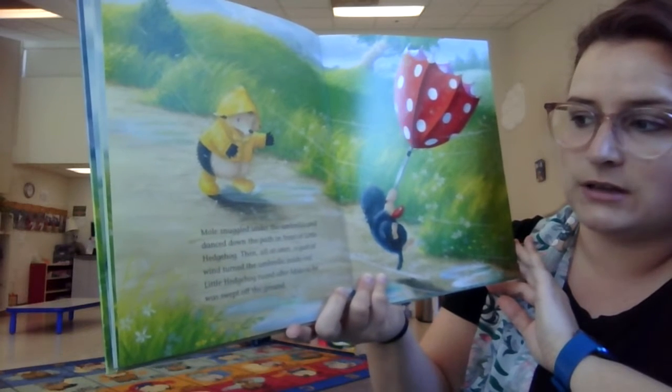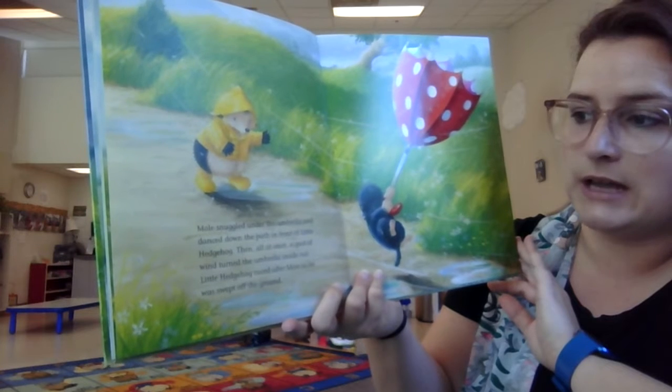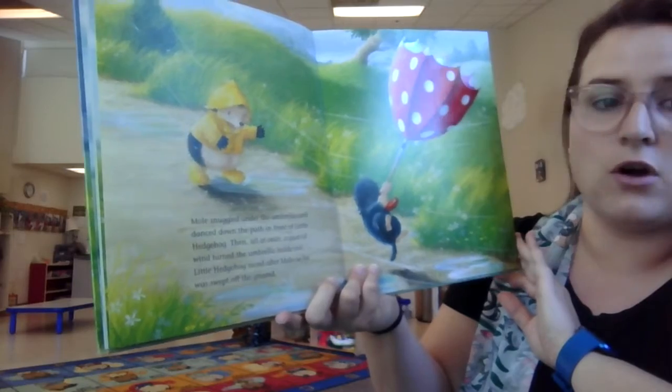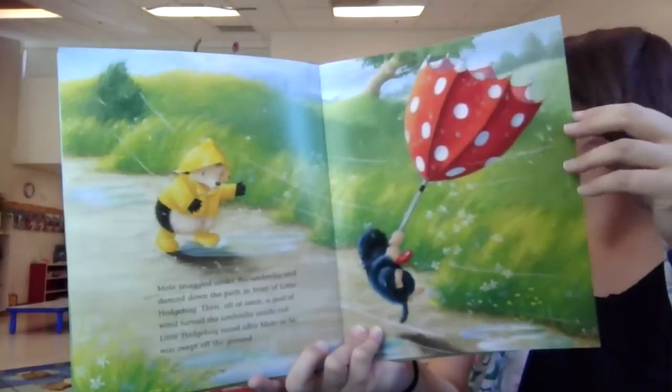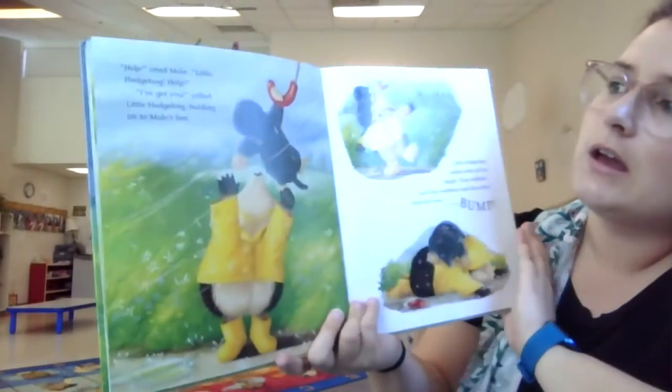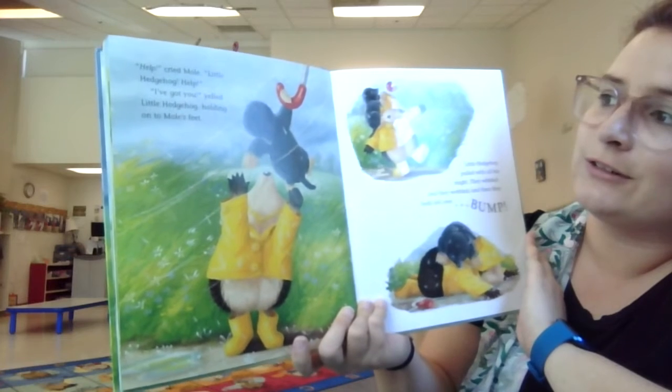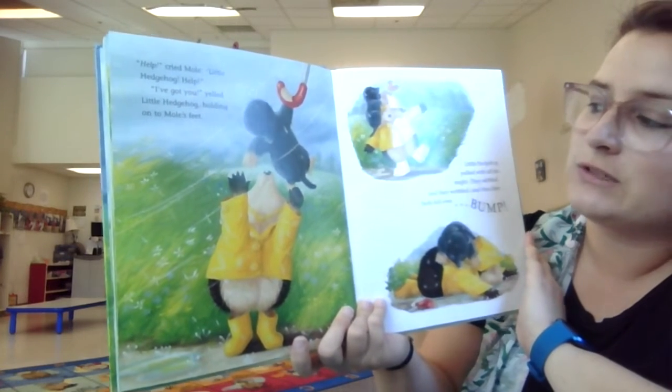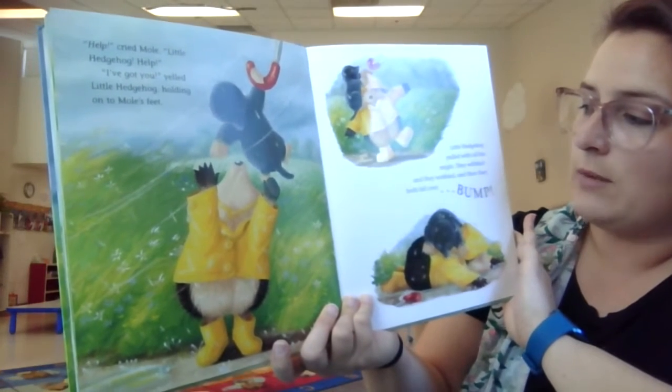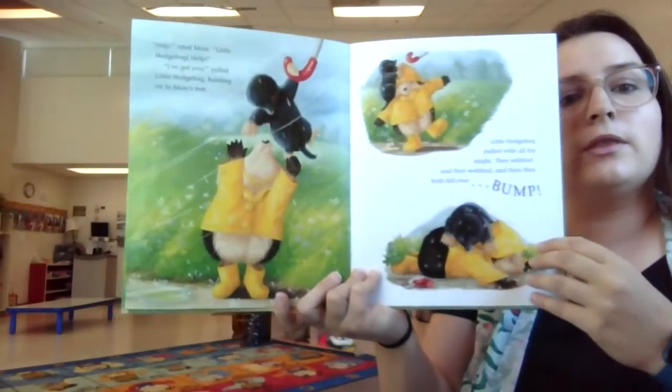Then, all of a sudden at once, a gust of wind turned the umbrella inside out. Little hedgehog raced after little Mole as he was swept off the ground. Help, cried little Mole. Help, little hedgehog. I've got you, yelled little hedgehog, holding onto Mole's feet. Little hedgehog pulled with all his might. They wibbled and then they wobbled and then they both fell over with a pop.